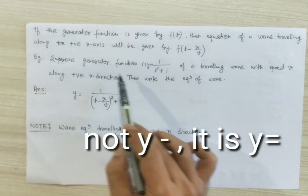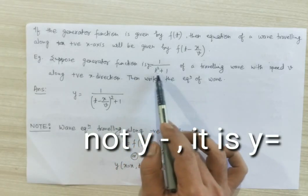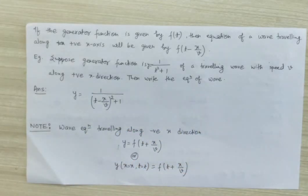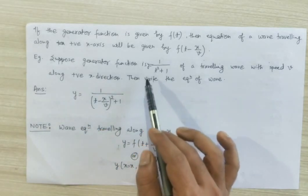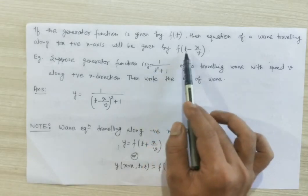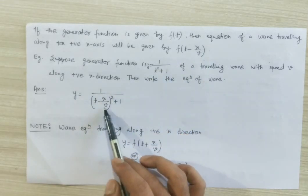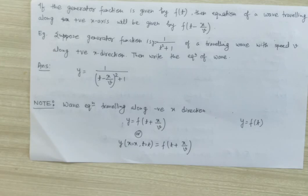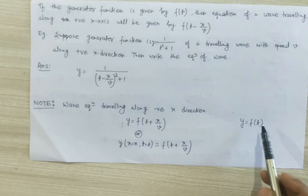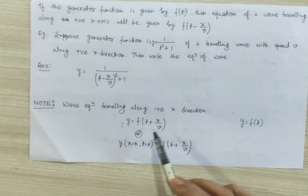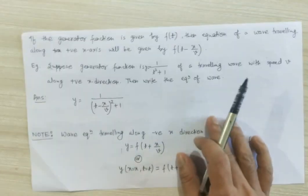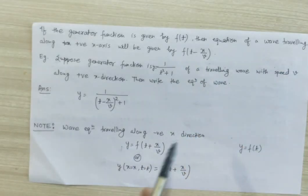For example, suppose the generator function is y equal to 1 divided by t squared plus 1 of a travelling wave with speed v along the positive x direction — then write the equation of the wave. Since the wave is moving along positive x direction, in place of t substitute t minus x by v, so this gives the equation of the travelling wave. Now if the wave is travelling along the negative x direction and y equal to f(t) is the generator function, then the equation of wave uses t plus x by v instead. So: positive x direction gives t minus x by v, and negative x direction gives t plus x by v.